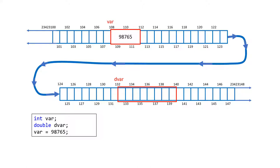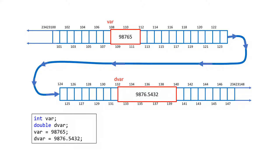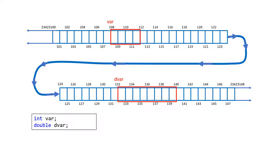When you set a variable to a value using its tag — its name — the value actually gets injected into where your variable is in memory. Because it knows it's an integer, it puts exactly the size of an integer. The same thing happens for a double: when you set the double variable to a value, it injects it into the variable.